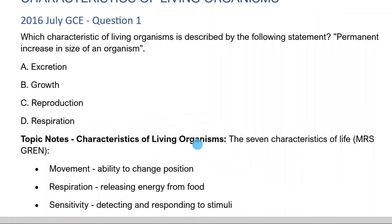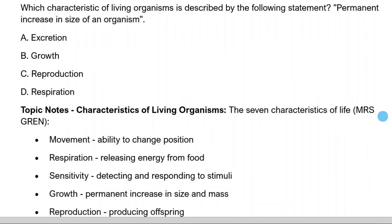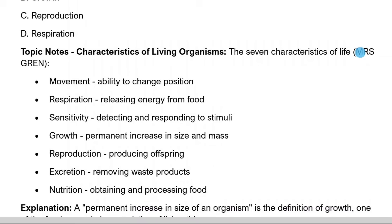Topic notes: characteristics of living things — the seven characteristics of life: Mrs. Green. Mrs. Green is an abbreviation of the seven characteristics of living organisms. M in Mrs stands for movement — ability to change position. R stands for respiration — releasing energy from food. S stands for sensitivity — detecting and responding to stimuli. G stands for growth — permanent increase in size and mass.